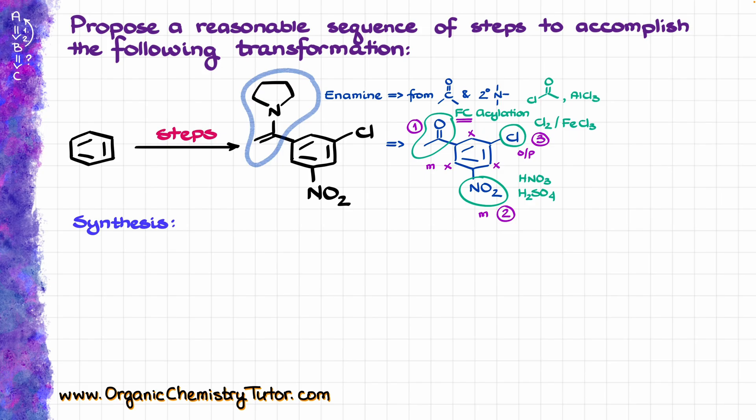And so, now when we have a very good idea of how our synthesis is going to look like, let's work on that and put it all together. Naturally, I'm going to start by redrawing my starting material, which is just simply benzene in this case. And, as I've mentioned a moment ago, my first step is going to be the Friedel-Crafts acylation reaction, giving us acetophenone as our product.